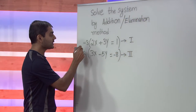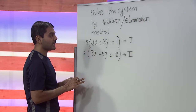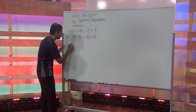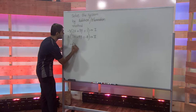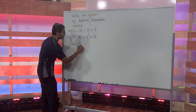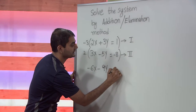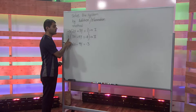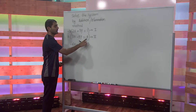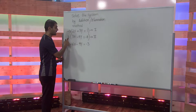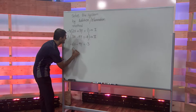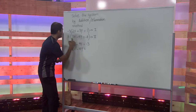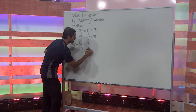Let's distribute negative 3 to each of the terms in equation 1. Distributing negative 3, we get negative 6x minus 9y equals negative 3. Now let's distribute positive 2 to each of the terms in equation 2. Distributing the 2, we get 6x minus 10y equals negative 16.